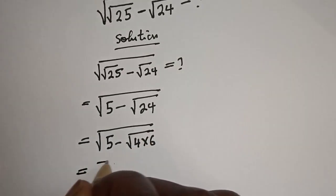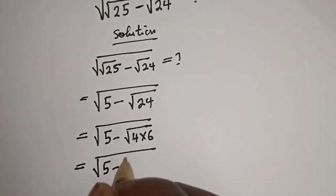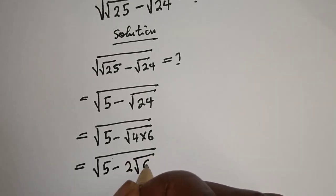Equal to square root of 5 minus, square root of 4 is 2, square root of 6.